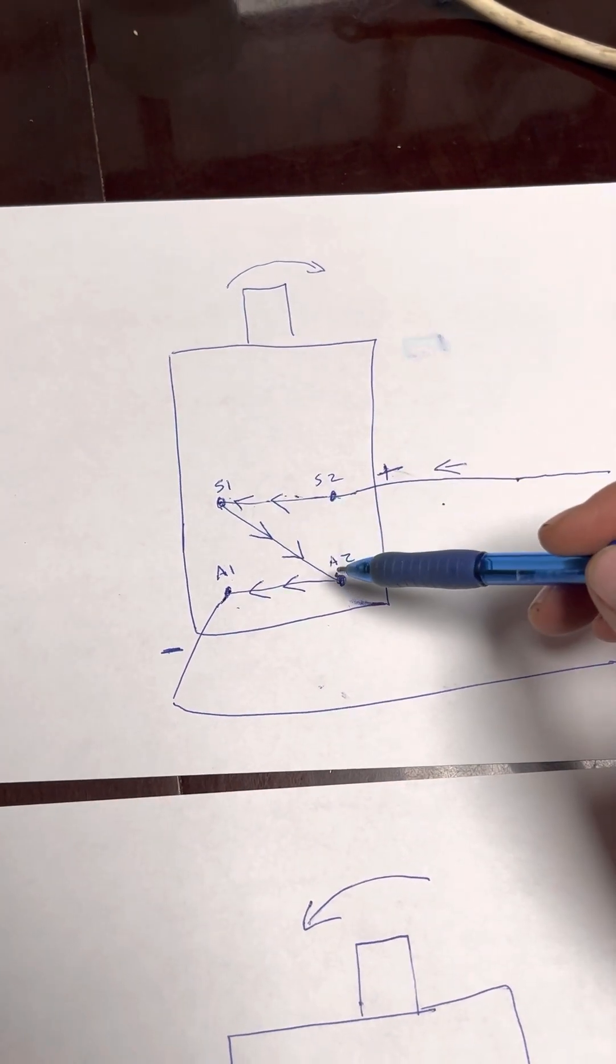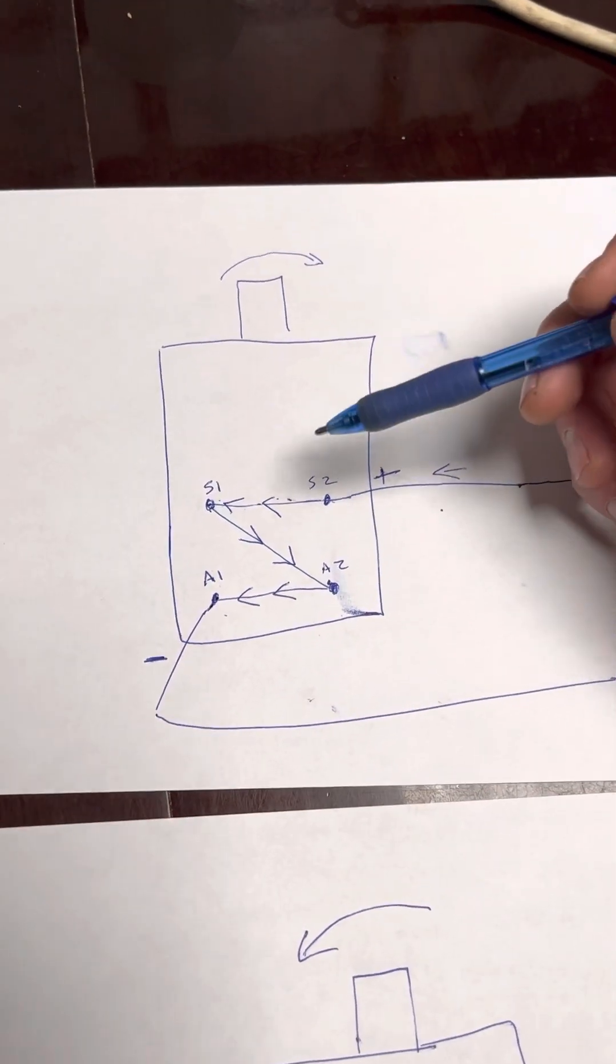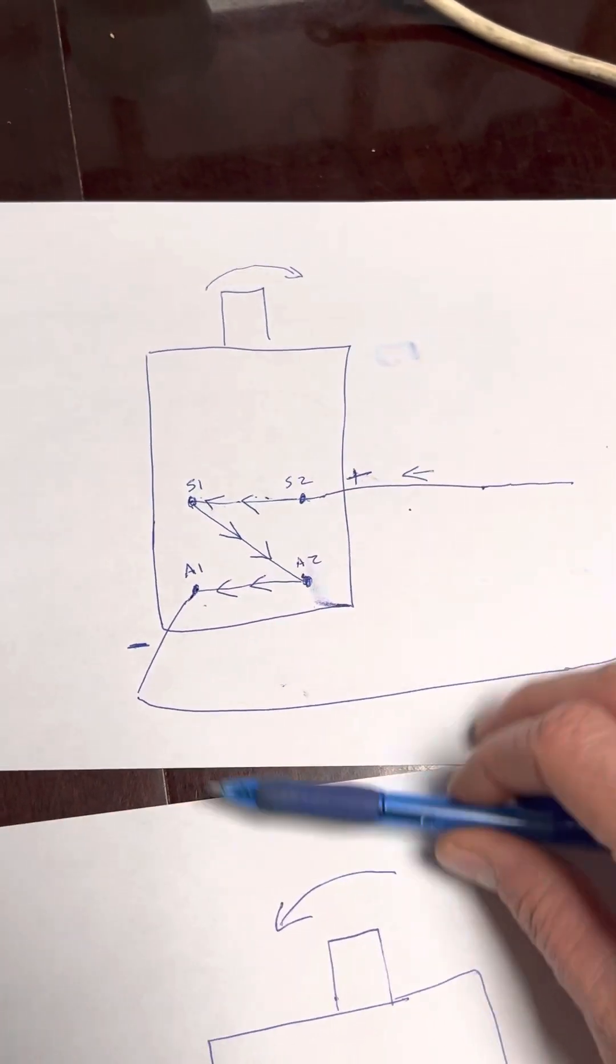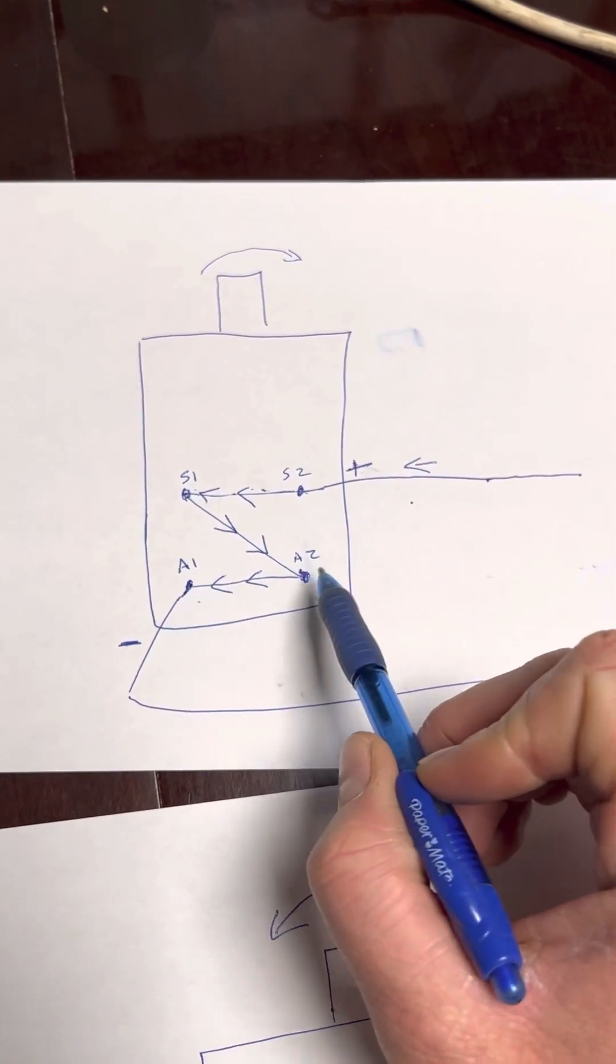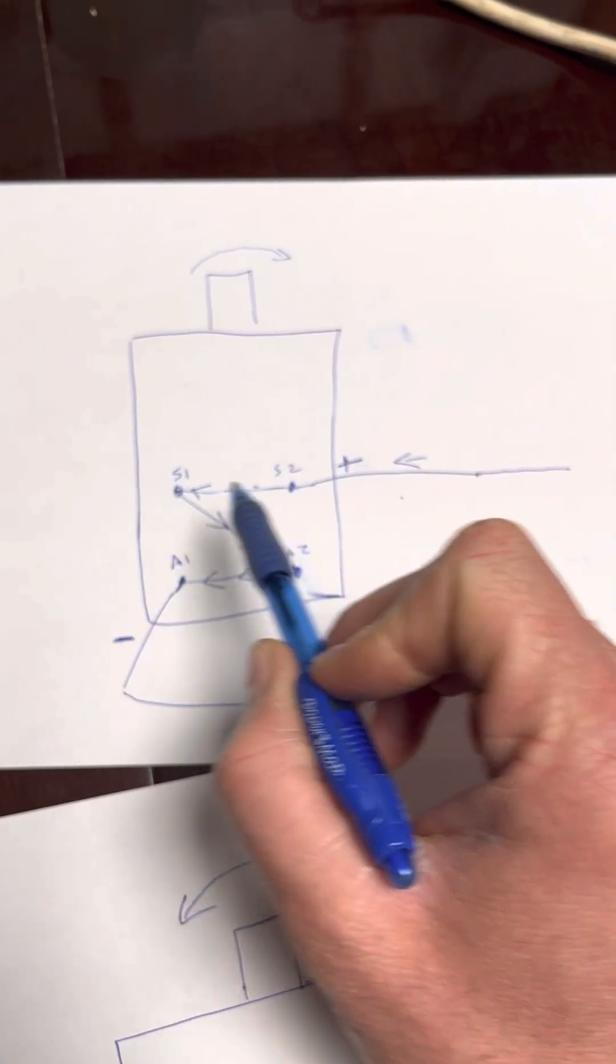So it goes through and then it goes through the armature. So you can see here, if we switch the polarity, what happens is we have the current going this way. So just imagine it going this way, this way, this way.